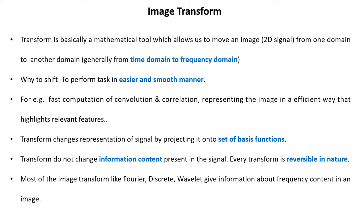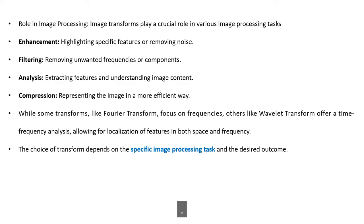Image transform is essentially a set of basis functions. Transforms do not change the information content present in the signal — that is, every transform is reversible in nature. Most image transforms, like Fourier and discrete wavelet, give information about the frequency content in an image.